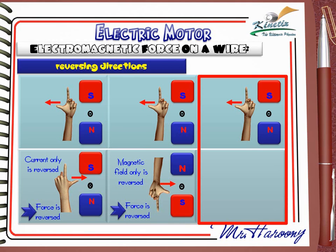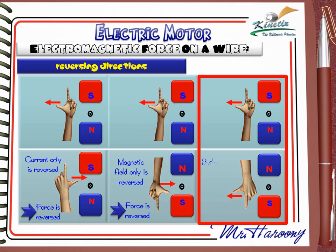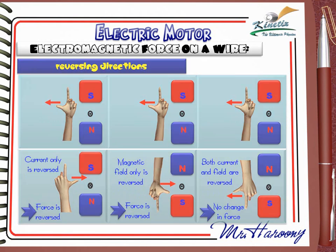In the third case, if both the magnetic field and the current are reversed, Fleming's Left Hand Rule shows the pushing direction remains to the left — the same as the original. So if both current and magnetic field are reversed, there is no change in the direction of the force.